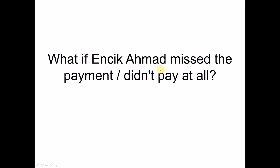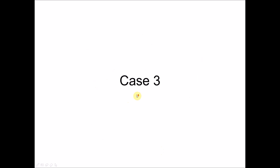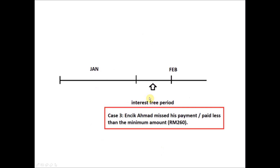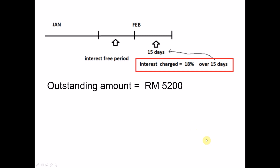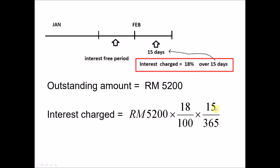What if Injia Ahmad missed the payment or didn't pay at all — including not paying the minimum payment? This leads us to Case 3. During the interest-free period, Injia Ahmad paid nothing, which is less than the minimum amount of RM260, so different charges will be imposed. After the interest-free period, since he didn't pay at all, the outstanding amount is still RM5,200. This RM5,200 is charged a finance charge of 18% per annum over 15 days: RM5,200 × 18% × 15/365 = RM38.47.